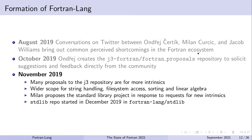In November of 2019, it became clear that many proposals within the repository were for more intrinsic functions with a wider scope for general-purpose programming tasks such as string handling, file system access, sorting algorithms, and various mathematical functions. Milan proposed starting a separate standard library project in response to these requests. In December of that year, the stdlib repository was started under the Fortran-lang namespace on GitHub.